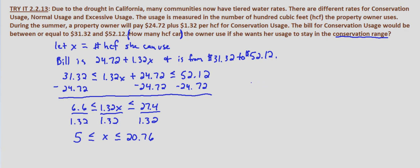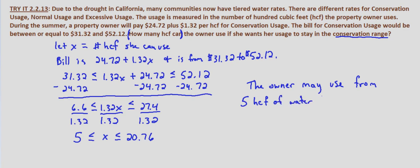So what this means is that the owner — I'll write this out in a complete sentence — the owner may use from 500 cubic feet of water to, and since this can only be in whole values per HCF with no other indication given, we have to round down. She can use at most 20 HCF, or 2,000 cubic feet of water.